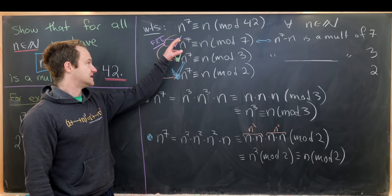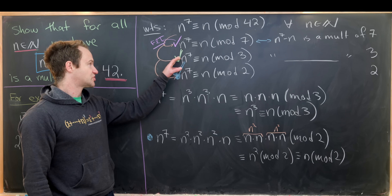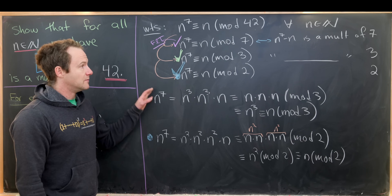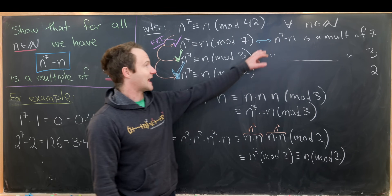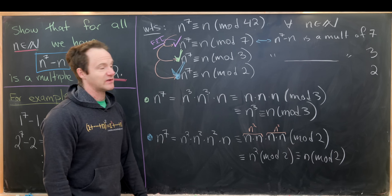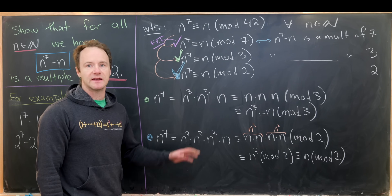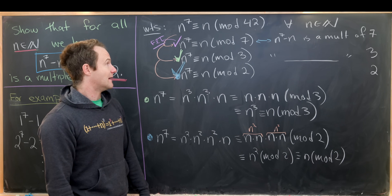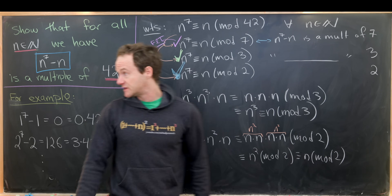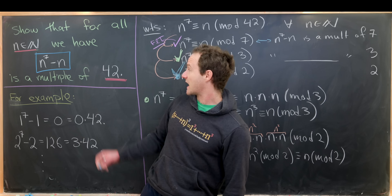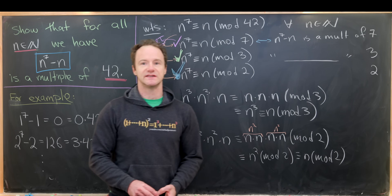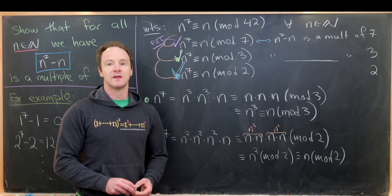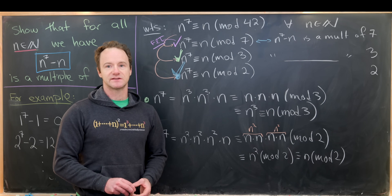Since we've shown the difference n to the 7 minus n is a multiple of 7, 3, and 2 respectively, it follows that the difference is a multiple of 42. That's exactly what we wanted to show, and that's a good place to stop.